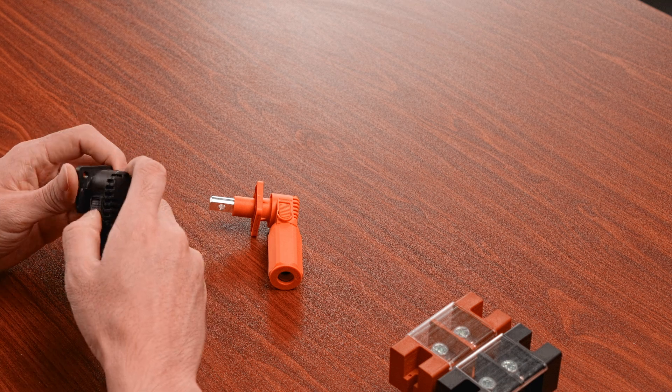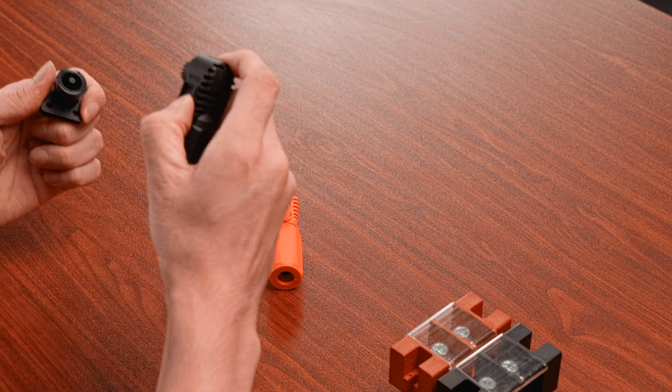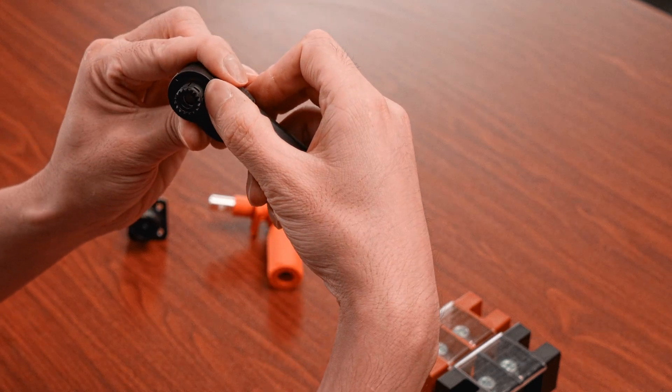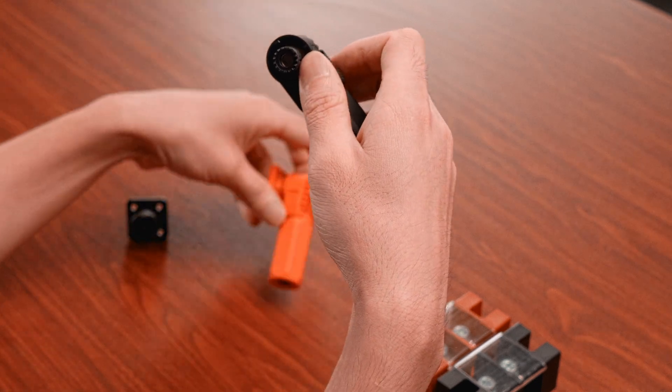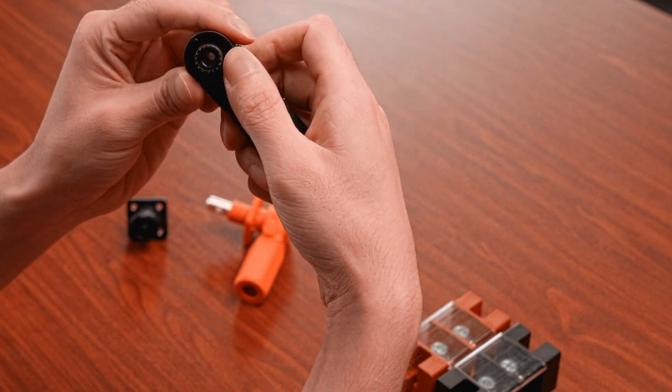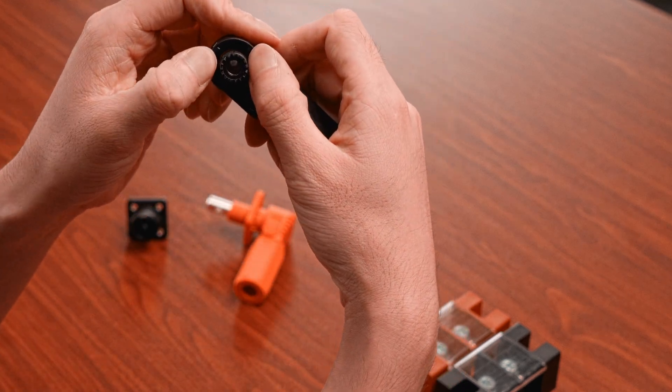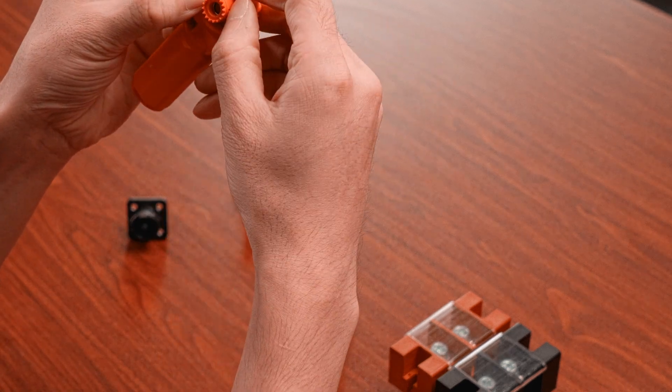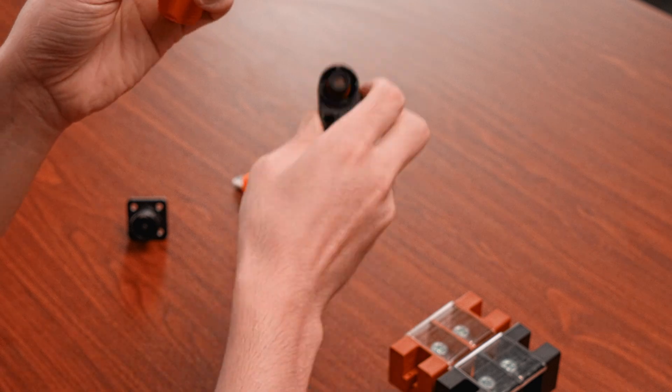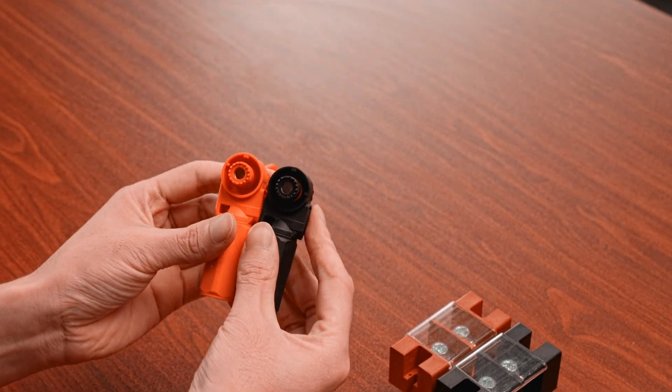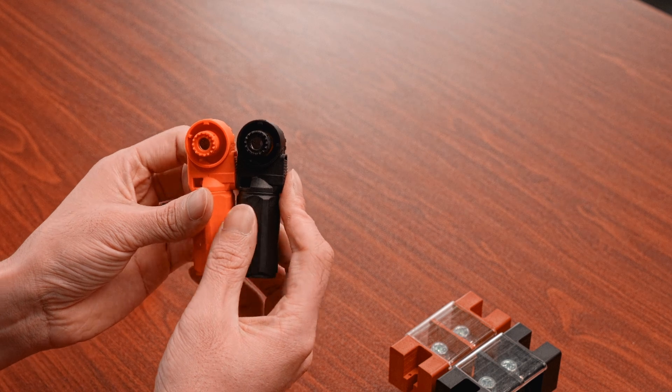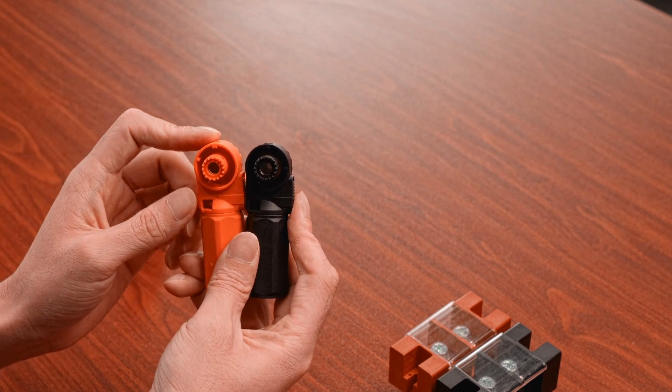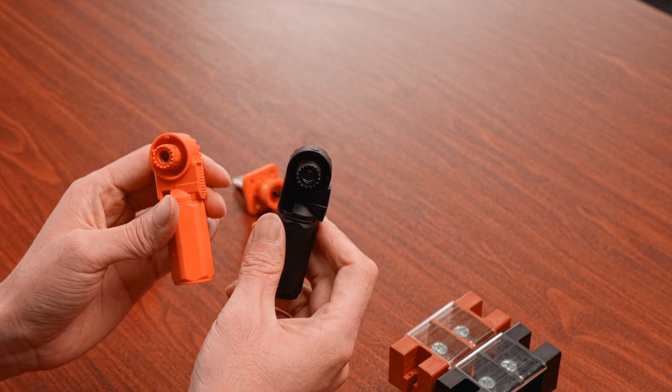The second part comes to, as you might find out, there are two convex in the plug. For the orange one, we got similar plug with similar convex. Now when we put them together, you might find out they are actually quite different because the convex for the orange one is on the left and the black one is on the right.